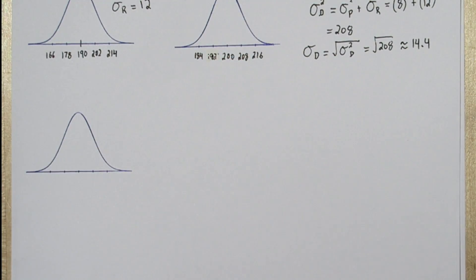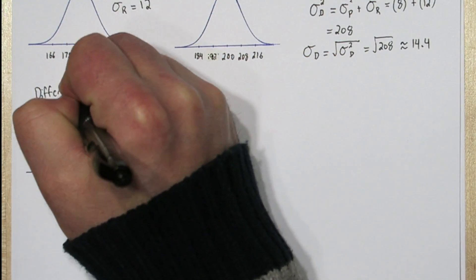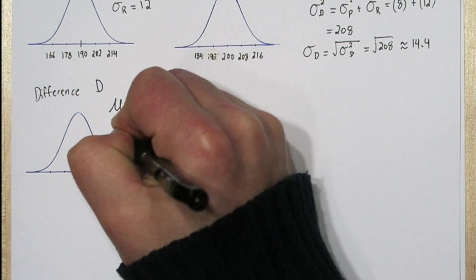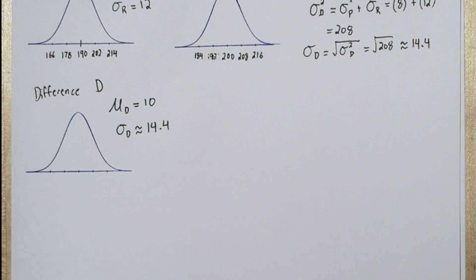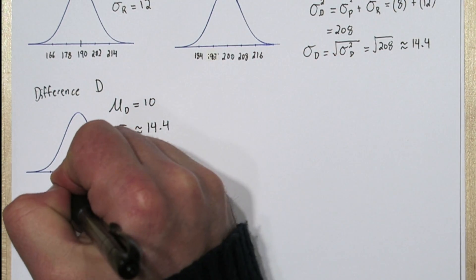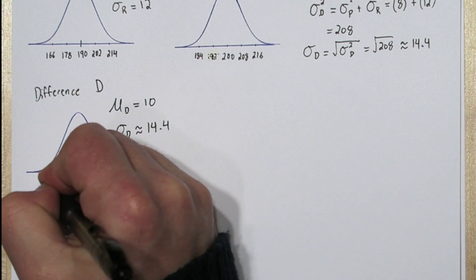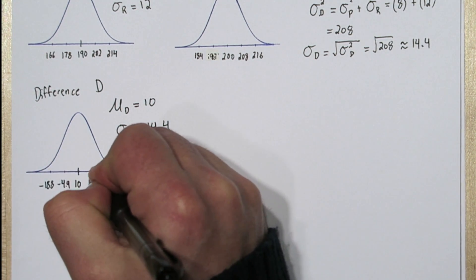Now the difference between the due dates is also normally distributed. And we just calculated that the mean is 10 and the standard deviation is about 14.4. So let's label a couple standard deviations from the mean on the axis.